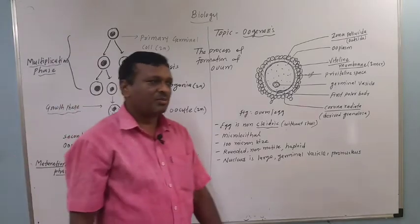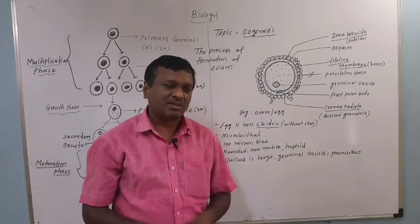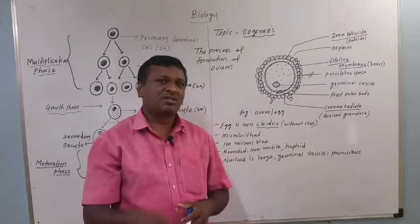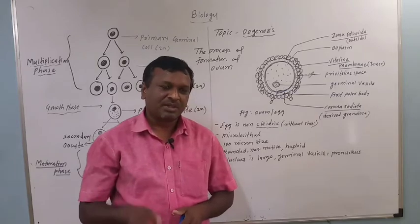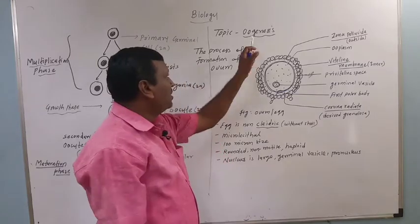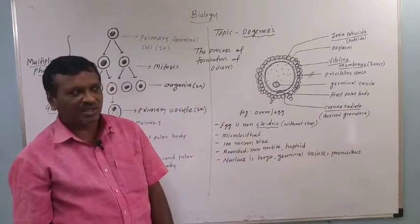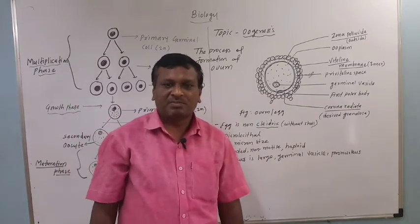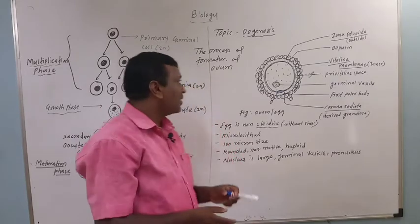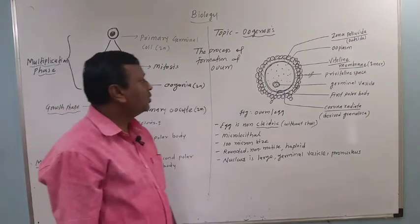The process of oogenesis mostly occurs in human female individuals. As part of gametogenesis, this process occurs in case of human female individuals, and in this case there is formation of a single ovum or egg from the primary germinal cell. This is known as oogenesis.